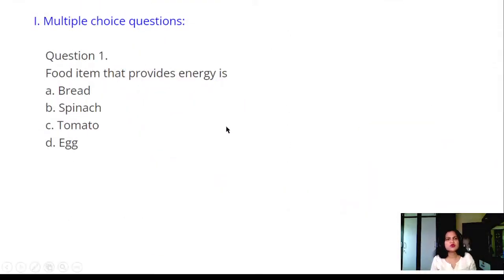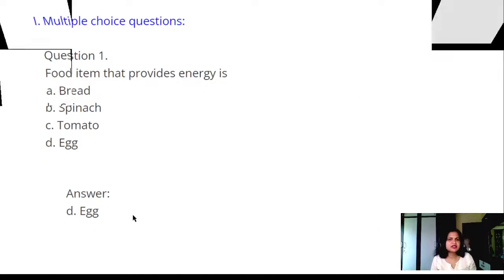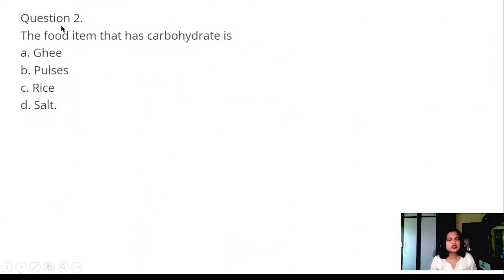Multiple choice questions. Question 1: Food item that provides energy is: bread, spinach, tomato, or egg? Answer: Egg. All these also provide energy, but egg is more appropriate, that's why mentioning that. Question 2: The food item that has carbohydrate is: ghee, pulses, rice, or salt? Answer: Rice. Rice is a carbohydrate. Ghee is a lipid or fat. Salt is mineral.